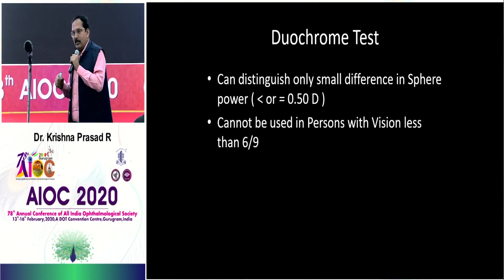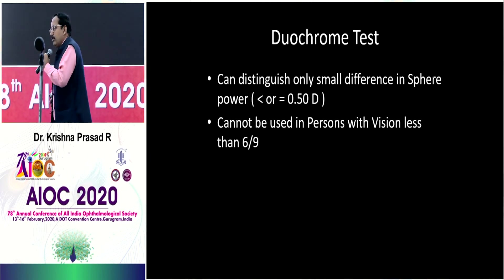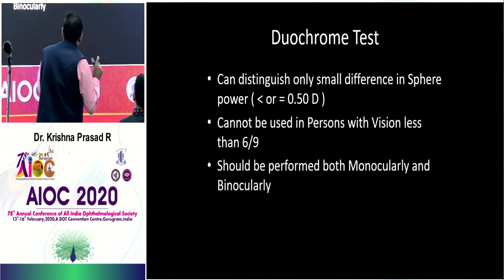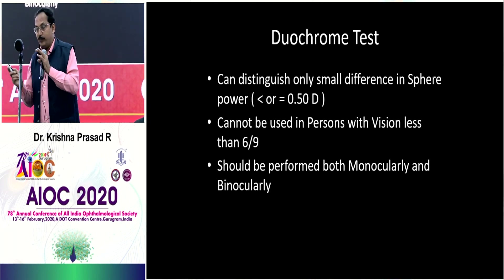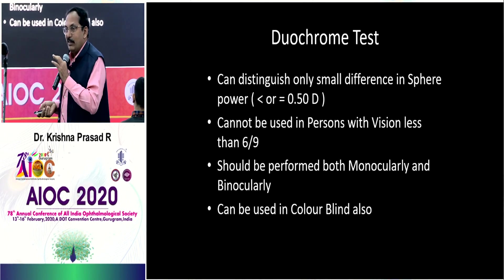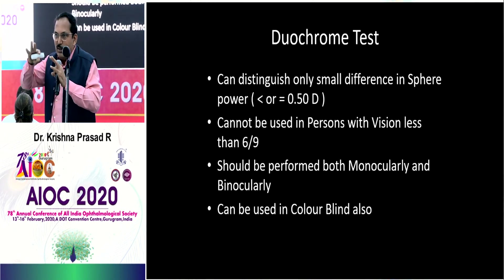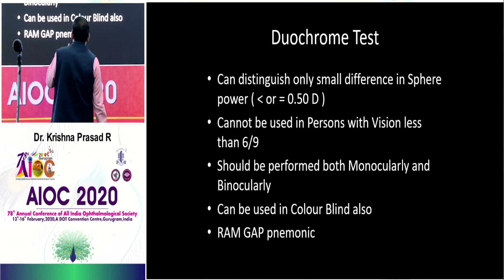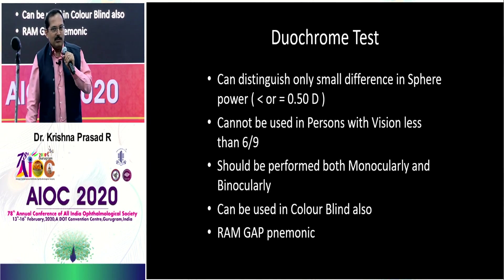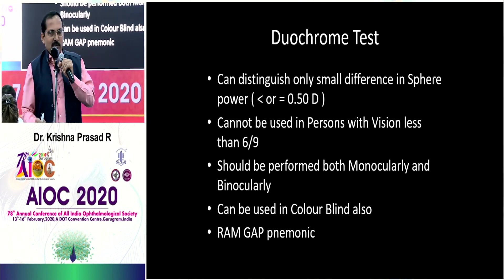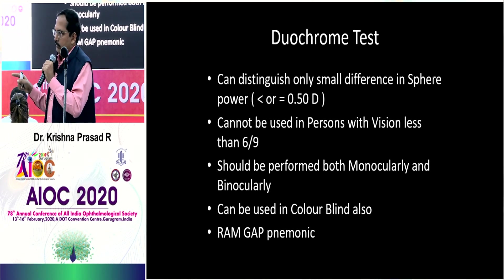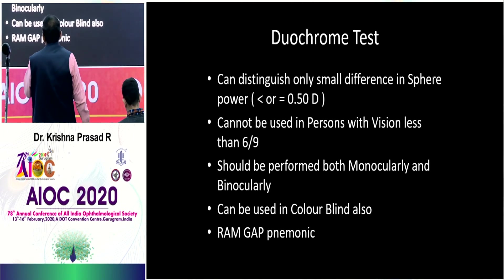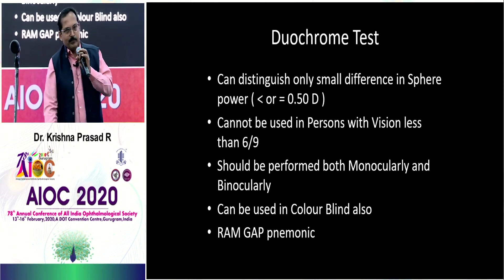The duochrome test is used to refine the sphere — the astigmatic dial refines the cylinder axis, whereas the duochrome test refines the spherical power. Always: if somebody has very poor vision, don't do the duochrome test. It works only for fine differences. It can be performed both binocularly and monocularly. Remember the RAM GAP mnemonic: Red Add Minus — if red looks better, add minus. If green looks better, add plus.